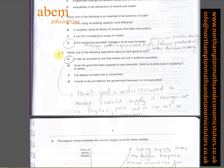In question number three, which one of the following statements about a merit good is true, the answer is A. It may be provided by the free market but in insufficient quantities. We know education from the private sector is underproduced and under-consumed, and that's why we have state education.